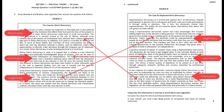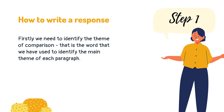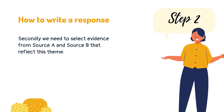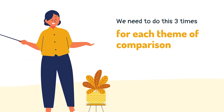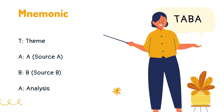Our next step is to draw connecting lines between each of the points of comparison. We will tackle the overall conclusion at the end of the process. Next we need to construct our written response, and the following technique will help you focus on the requirements of the question. The first step is to identify the theme of comparison, then select evidence from Source A and then Source B that reflects this theme. Finally, we analyse what this evidence tells us about direct and representative democracy. We need to follow this structure three times. We could use the mnemonic TABA to help us remember: T for theme, A for Source A, B for Source B, and A for analysis.